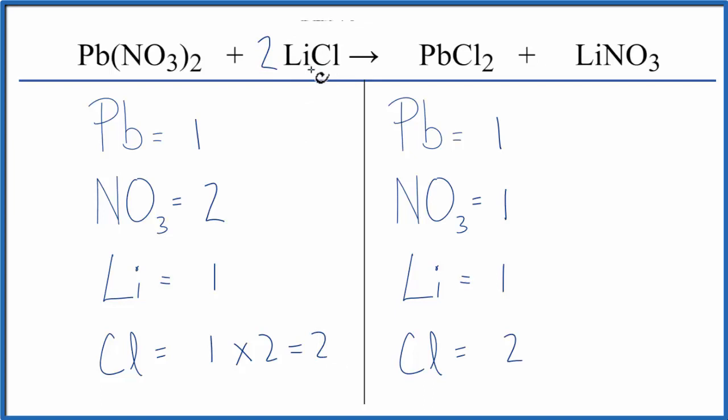2 applies to everything. So 1 lithium times 2. That gives us 2 of those. Let's just balance the lithiums. We have 2 here and 1 here. So a coefficient of 2 in front of the lithium nitrate, 1 times 2. That gives us 2 lithiums. Those are balanced.